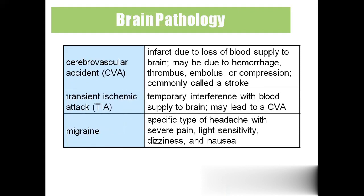'CVA' — cerebrovascular accident — involves infarction, meaning the death of brain cells due to loss of blood supply to part of the brain. The loss of blood supply may be because of hemorrhage, thrombus, embolus, or any other reason. Finally, blood supply to a particular part of the brain stops, the brain cells die, and we call the dying of brain cells infarction.